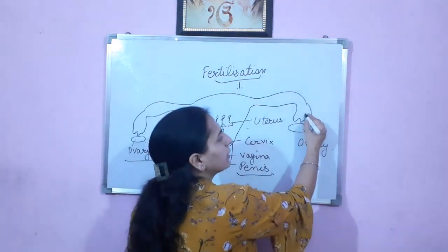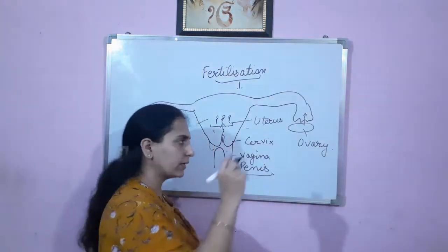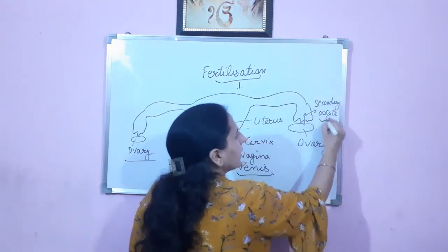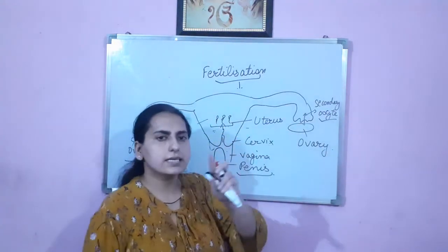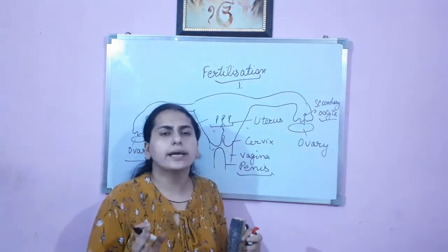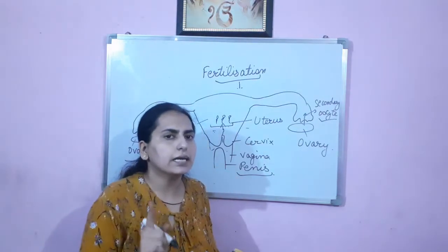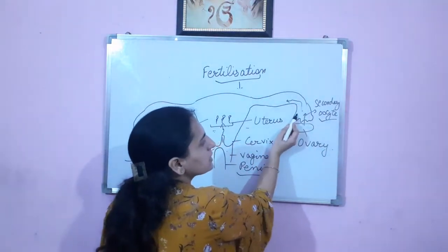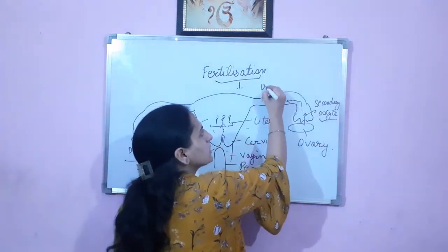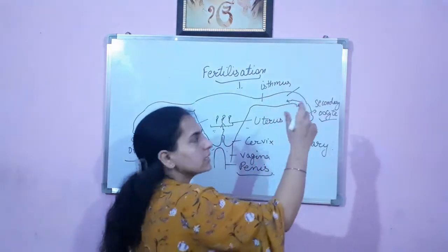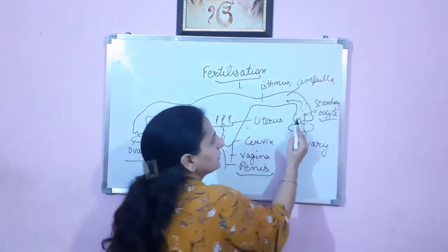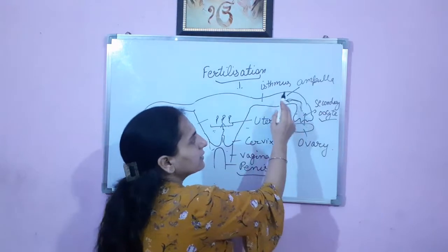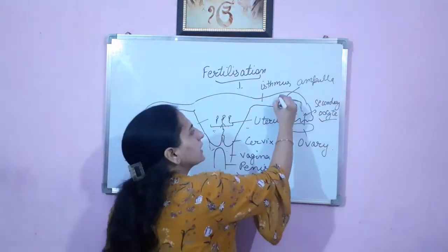The ovary will release the secondary oocyte — that is not the ovum, there is a difference. In one menstrual cycle, one egg is released. On average, in 28 to 29 days, only one secondary oocyte is released. It will travel to the fallopian tube. The broadened part is ampulla, this part is isthmus, and the part with finger-like processes is infundibulum. The secondary oocyte travels and reaches the junction of the isthmus and the ampulla.